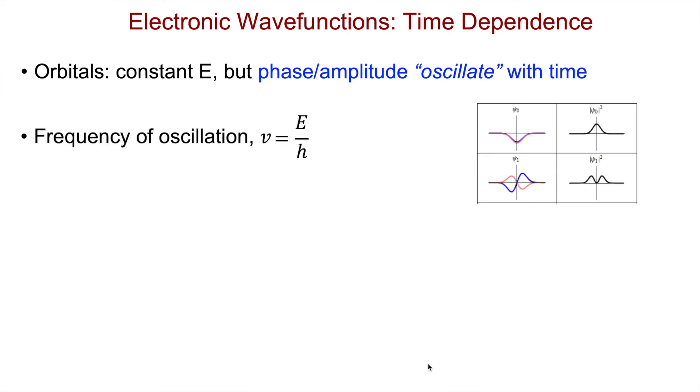We can calculate this frequency of oscillation. It's just equal to their energy divided by the value of Planck's constant. So for example, for a 1s orbital, a hydrogenic one, where the energy is minus roughly 14 eV, that frequency is about 1.3 times 10 to the 17 per second.